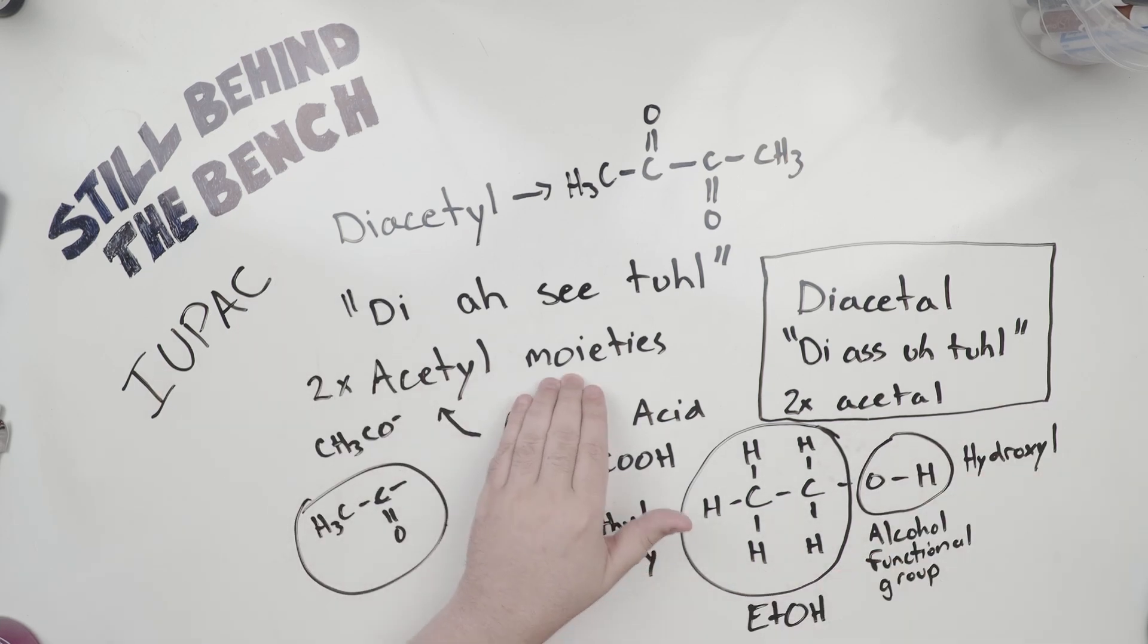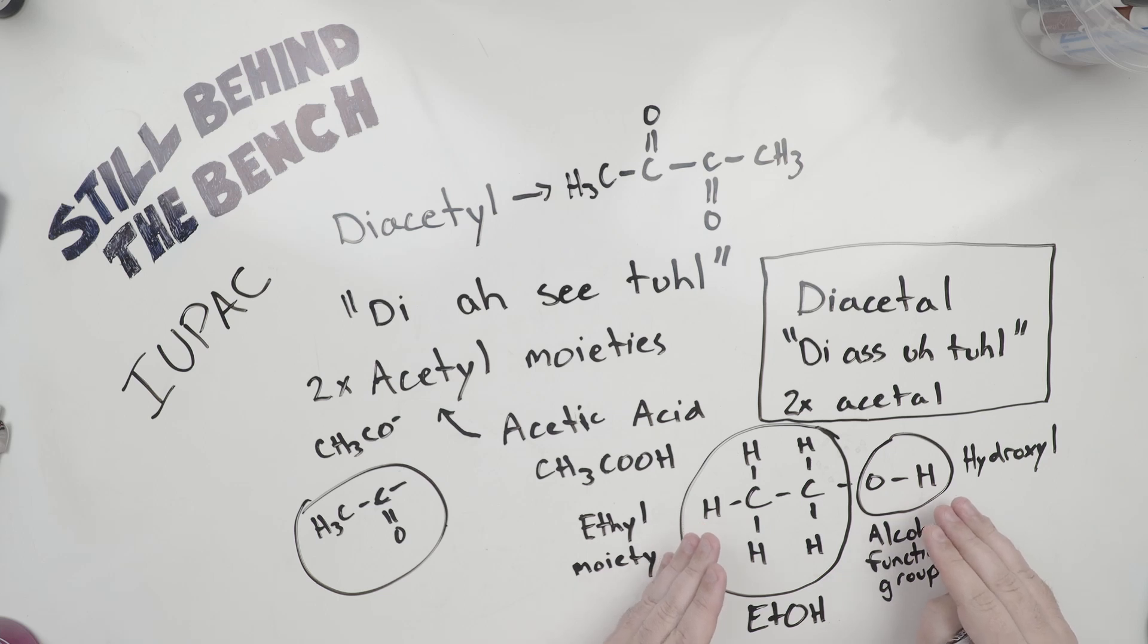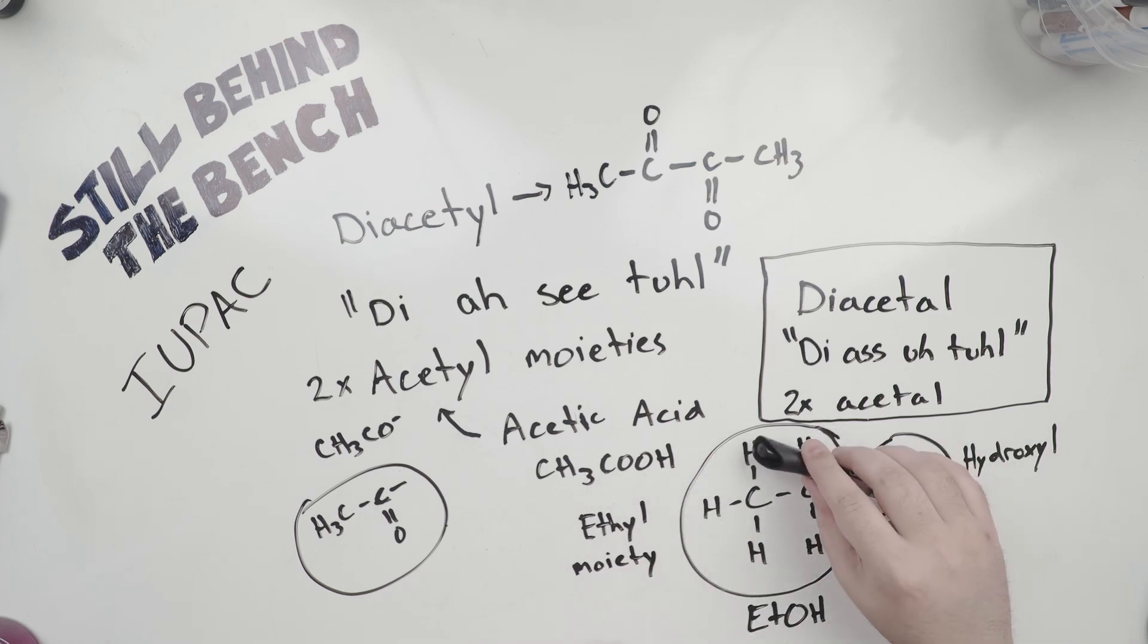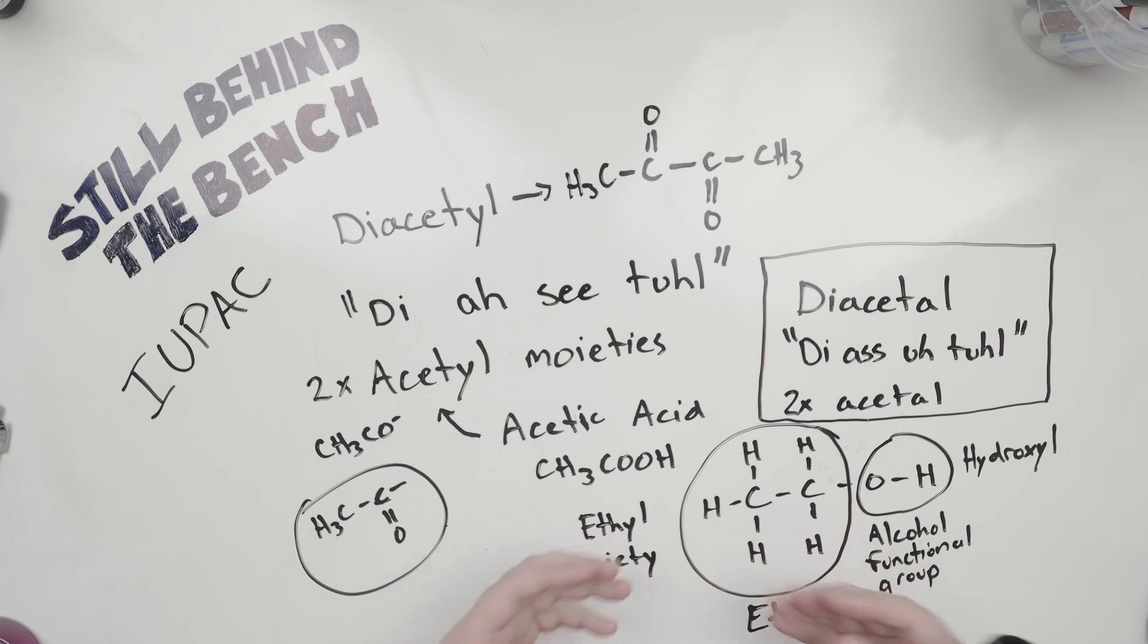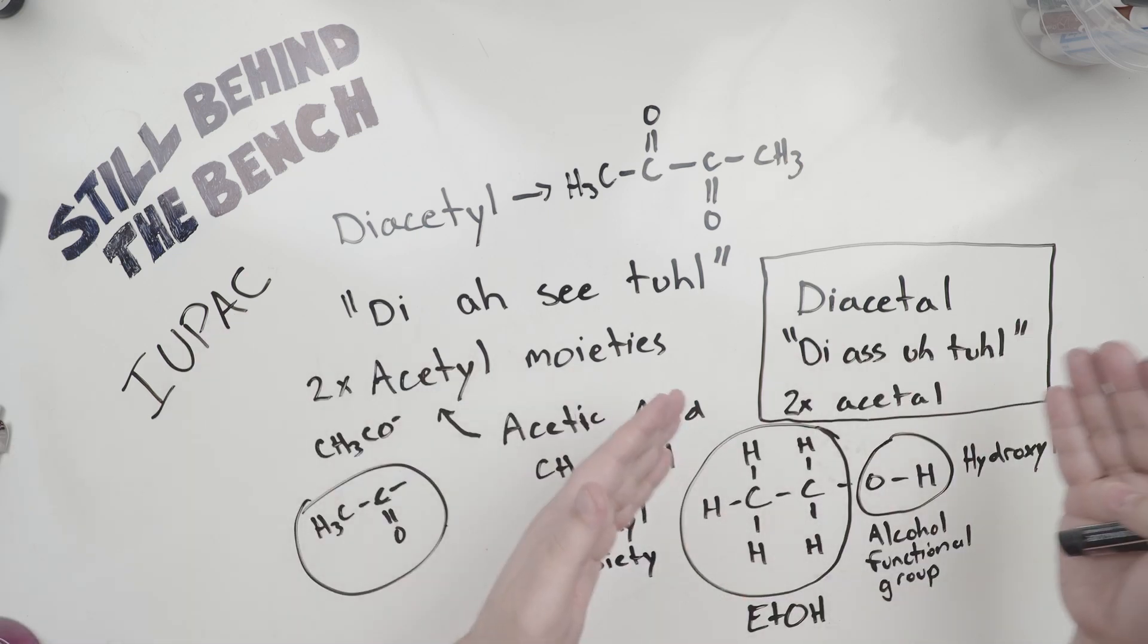So note on what a moiety is. So we have our ethanol molecule here. We have our alcohol functional group called a hydroxyl. And then we have this CH3CH2 portion. Since you group this as a functional group here, you can group the rest of this molecule and call it a moiety. So a moiety is essentially just a subunit of a molecule. And if it shows up in a lot of different places or a lot of different molecules, they'll call it a moiety. In this case, they call it an ethyl moiety.